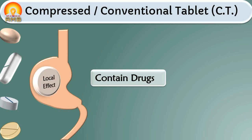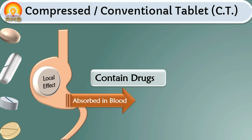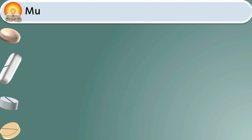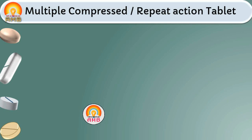Compressed tablets contain drugs which are effective locally in the gastrointestinal tract or absorbed systemically and distributed all over the body. These tablets mainly contain water-soluble drugs which can be disintegrated in the stomach and absorbed from the stomach, small intestine, and large intestine. The next type is multiple compressed tablet.